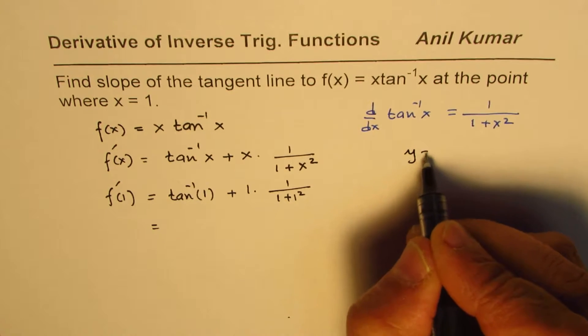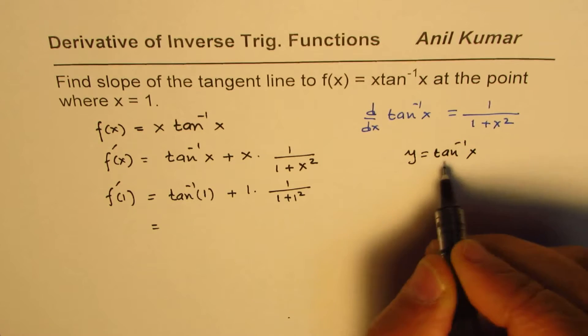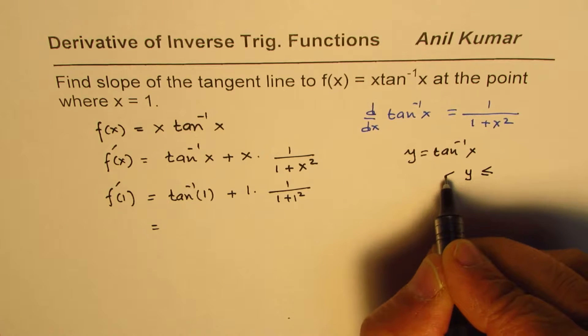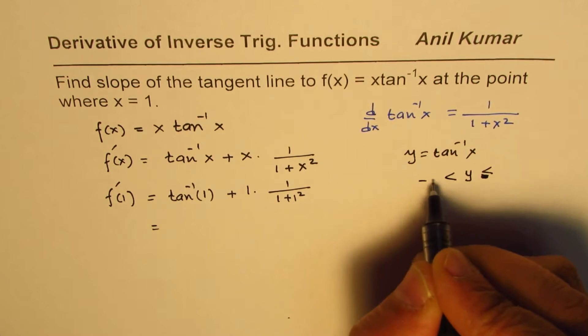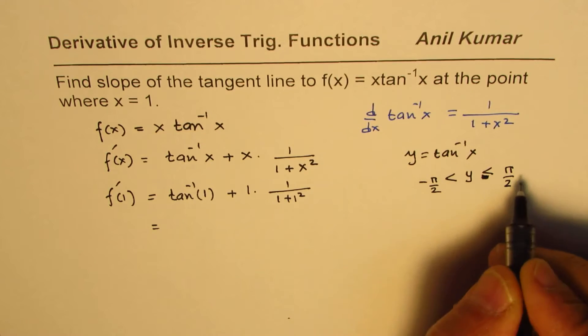When I say y = tan⁻¹(x), in that case y, the angle, is between -π/2 and π/2. It is within this interval.